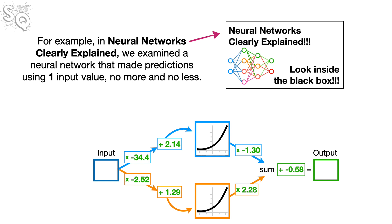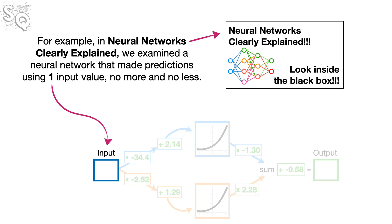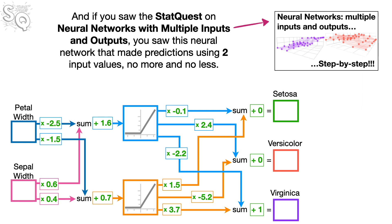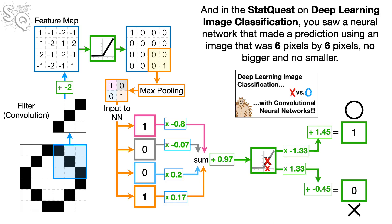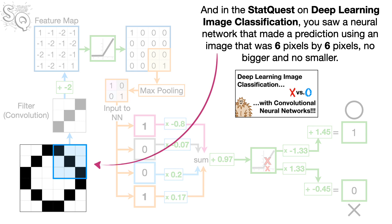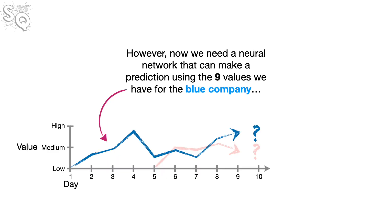This is a big difference compared to the other neural networks we've looked at in this series. For example, in Neural Networks Clearly Explained, we examined a neural network that made predictions using one input value, no more and no less. And if you saw the stat quest on neural networks with multiple inputs and outputs, you saw this neural network that made predictions using two input values, no more and no less. And in the stat quest on deep learning image classification, you saw a neural network that made a prediction using an image that was six pixels by six pixels, no bigger and no smaller.